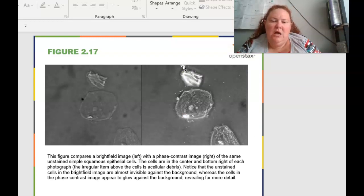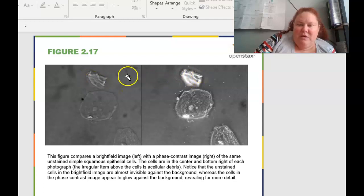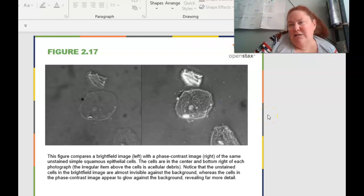So with this guy, it's showing you brightfield imaging on the left, you can see it's kind of plain Jane. You really don't get to see a whole bunch. And so then what you can do is use phase contrast. And that's what we were just talking about, just applied. And you can see that in this picture. So these are unstained samples, squamous epithelial cells. So skin cells that are squishy squamous ones. And the cells are in the center and the bottom right of each photograph. And this is artifact or cellular debris. So notice that the unstained cells in the brightfield image are almost invisible. You can see them, but not very well. But then when we use the phase contrast, they really just pop. And so we can use our science knowledge to figure out how to best visualize the different cells.